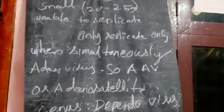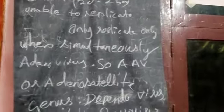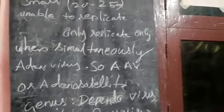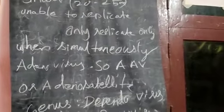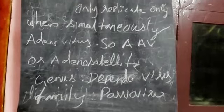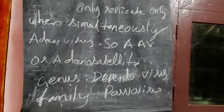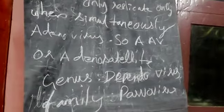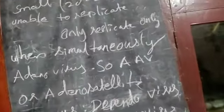They are also called adeno-satellite because of their satellite-like appearance. They come under the genus Dependovirus and the family Parvoviridae. Detection can be carried out by immunofluorescence, antigenic sera, or complement fixation.